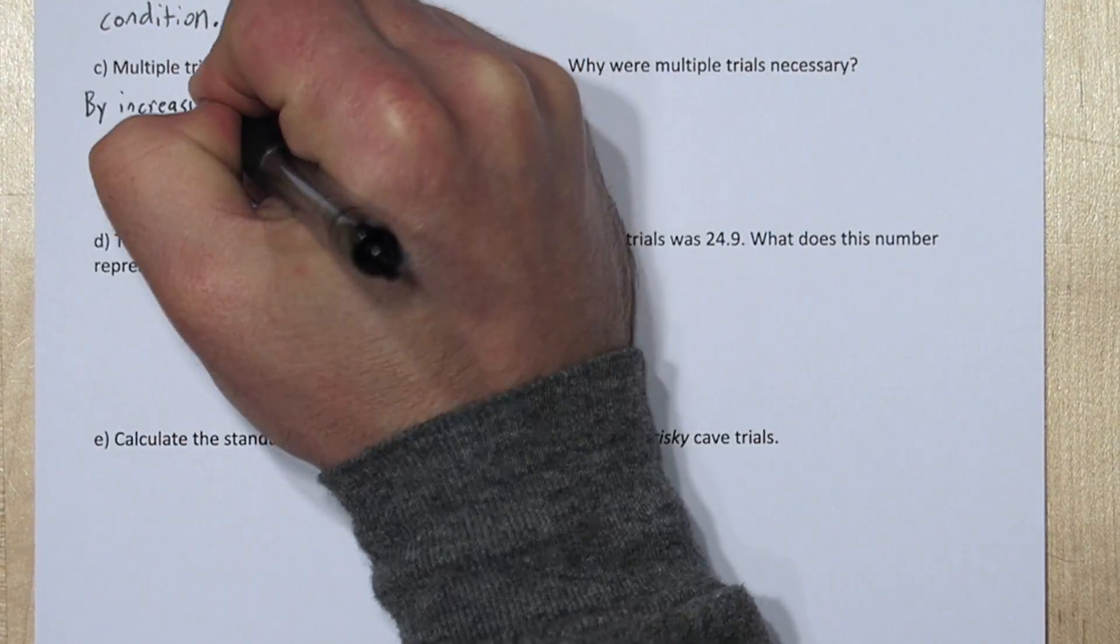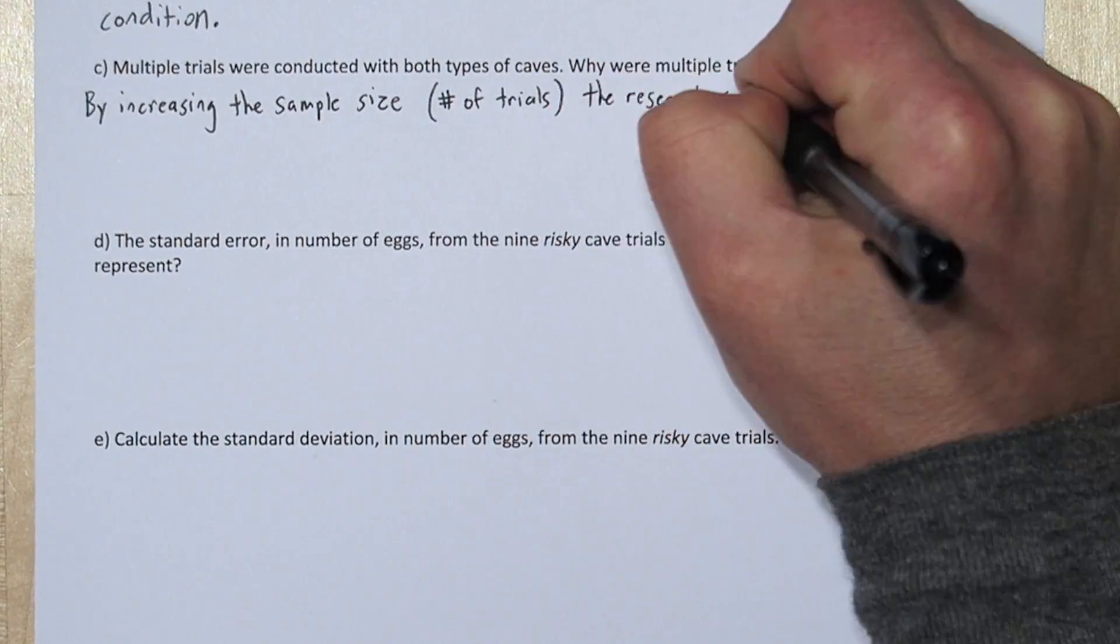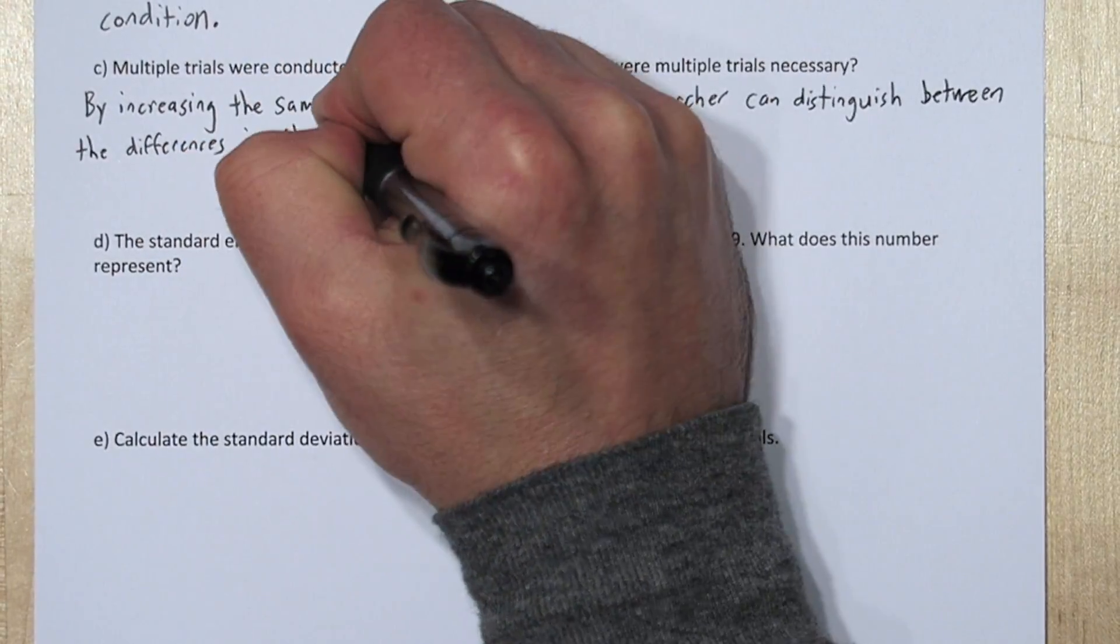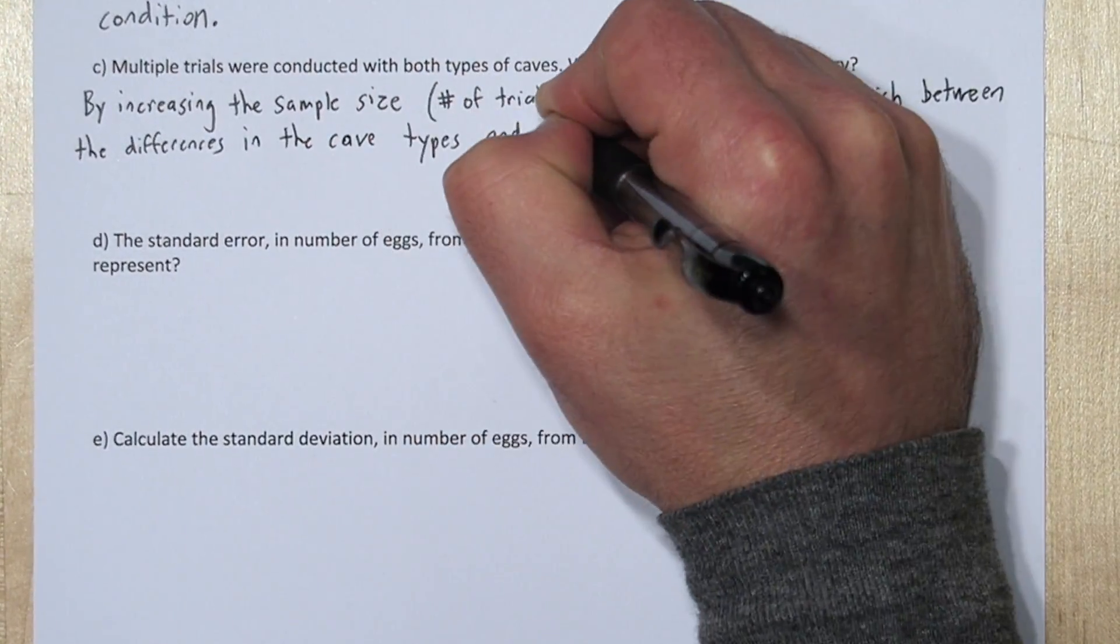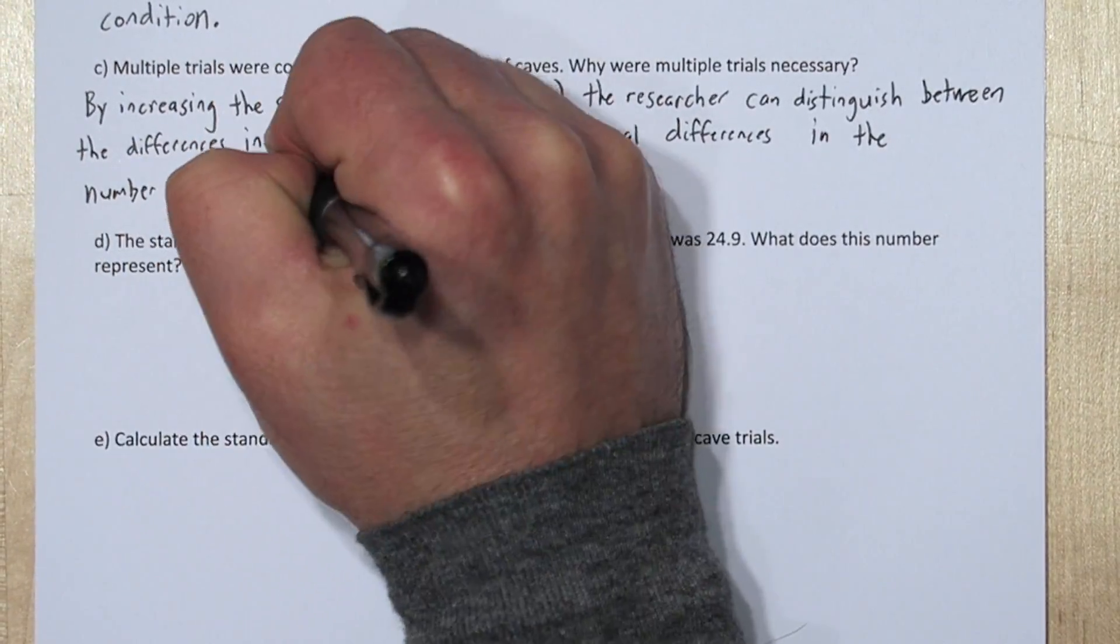Now, the number of eggs the female lays varies from batch to batch, regardless of what type of cave she's provided with. But by increasing the sample size, the number of trials, the researcher can distinguish between the differences in the cave types and the natural differences in the number of eggs laid.